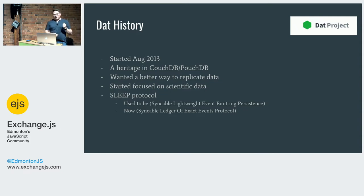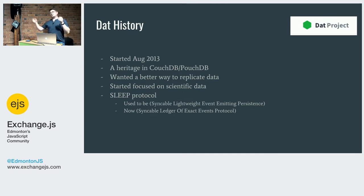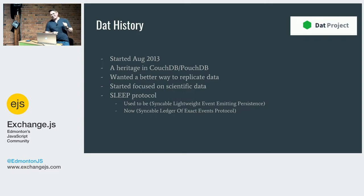A little about the history: Dat was started in August 2013, about five years ago. It really has a heritage in the CouchDB and PouchDB community — I've been involved in that community with CouchApp things. A lot of ideas were pulled from there and experimented with. They wanted a better, faster way to replicate data, focused on scientific data — specifically, how scientists who create large datasets can share them with their peers rather than putting them in a central repo. They came up with the SLEEP protocol — a funny acronym they've actually changed over time.